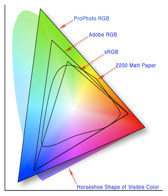The RGB color model is implemented in different ways, depending on the capabilities of the system used. By far the most common general implementation as of 2006 is the 24-bit implementation, with 8 bits, or 256 discrete levels of color per channel. Any color space based on such a 24-bit RGB model is thus limited to a range of 256 × 256 × 256, or 16.7 million colors. Some implementations use 16 bits per component for 48 bits total, resulting in the same gamut with a larger number of distinct colors.